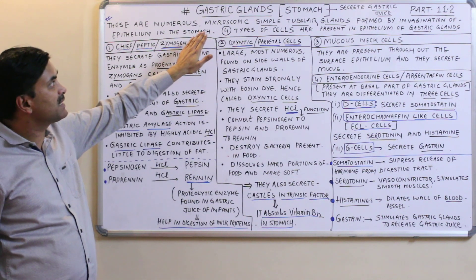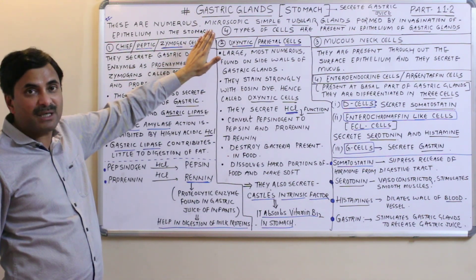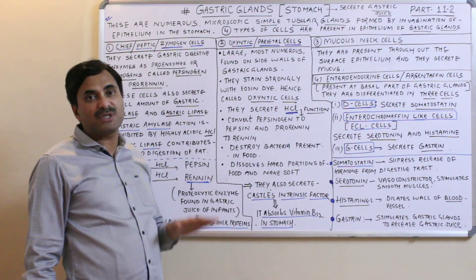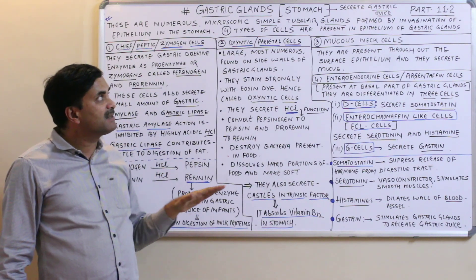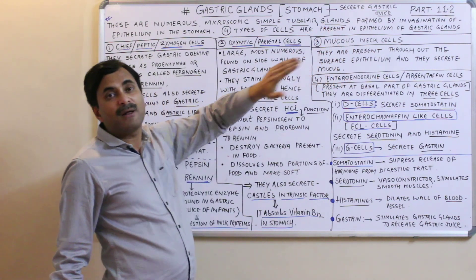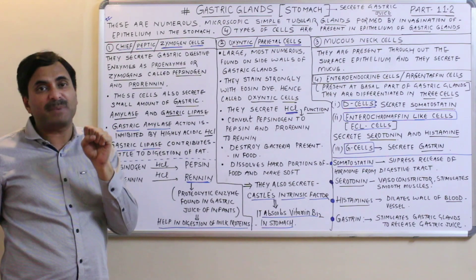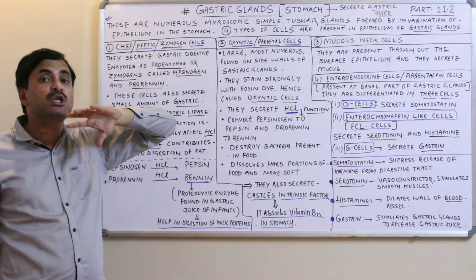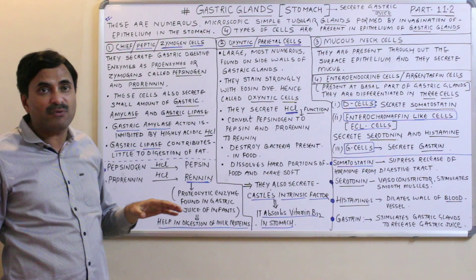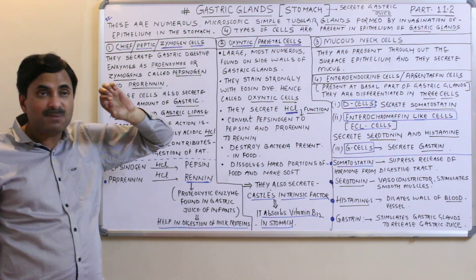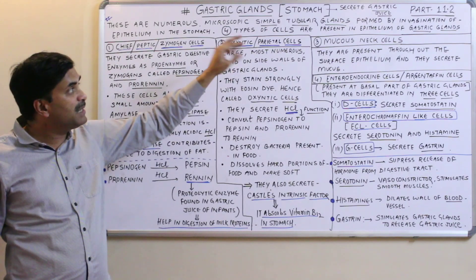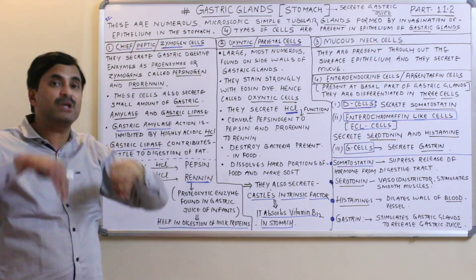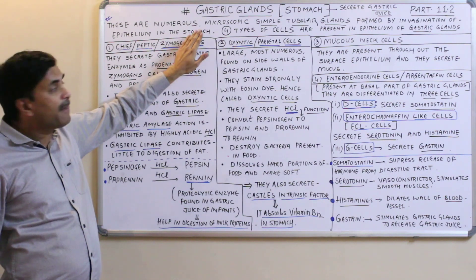Today we are going to discuss the second part of the stomach, which is the gastric glands. Gastric glands are found in the stomach and they secrete gastric juice, which has an acidic pH because of HCl. These gastric glands are present in large numbers — they are numerous, very small, microscopic, and are simple tubular glands formed by the invagination of the epithelium in the stomach.